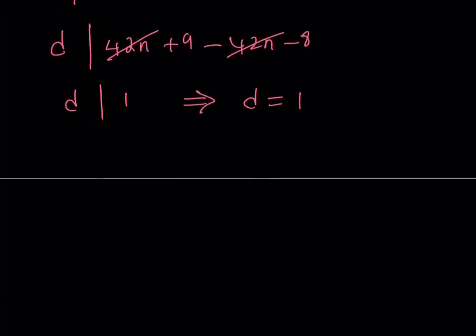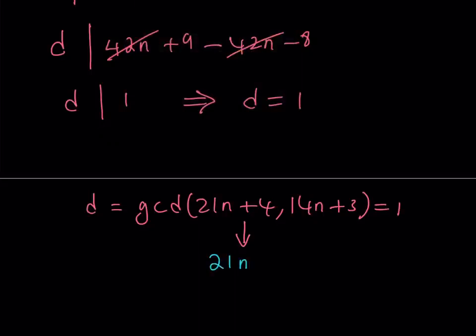Now, what is that supposed to mean for D to be equal to 1? D was the GCD of these two numbers, remember? It just means that the GCD of 21n plus 4 and 14n plus 3 is equal to 1. And this just means that 21n plus 4 divided by 14n plus 3 is irreducible because the GCD of the numerator and the denominator is 1.